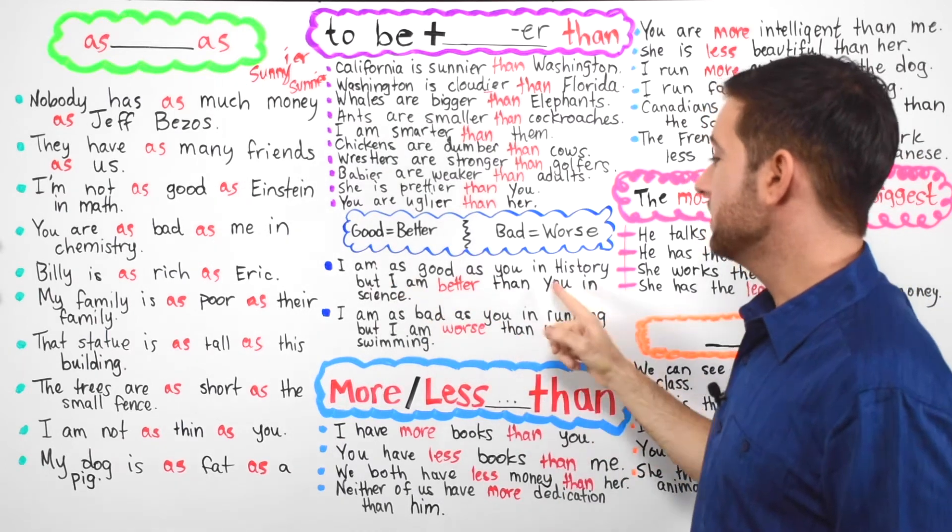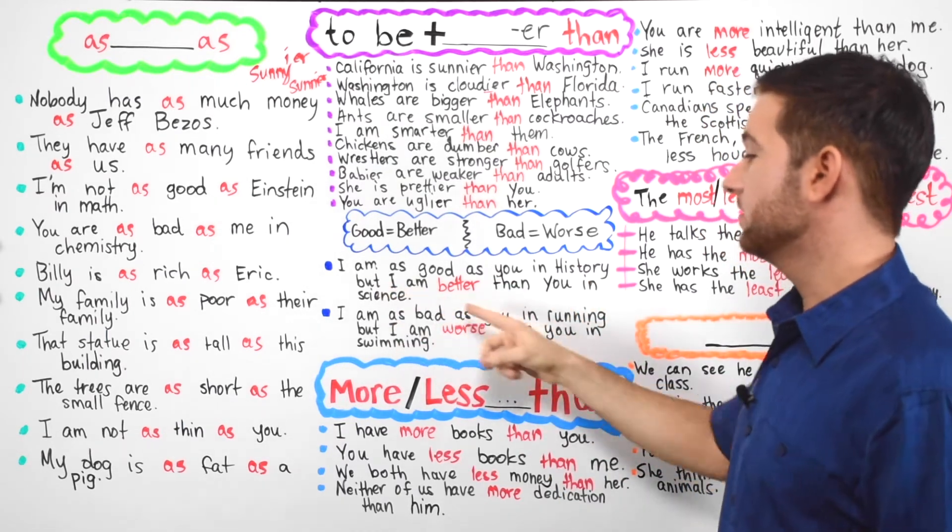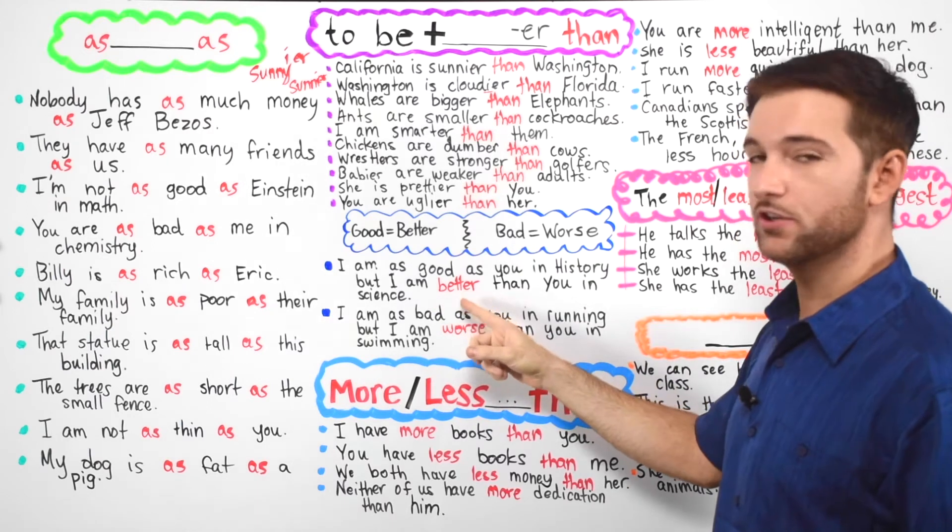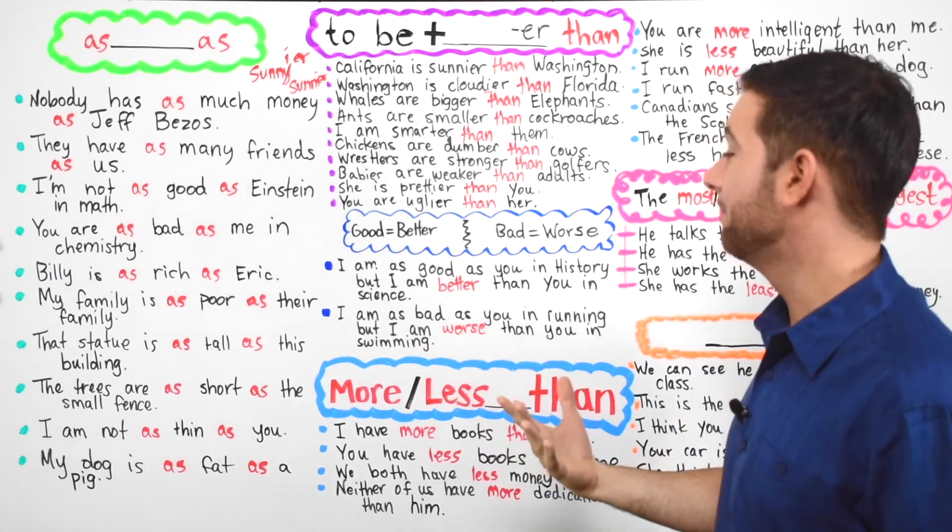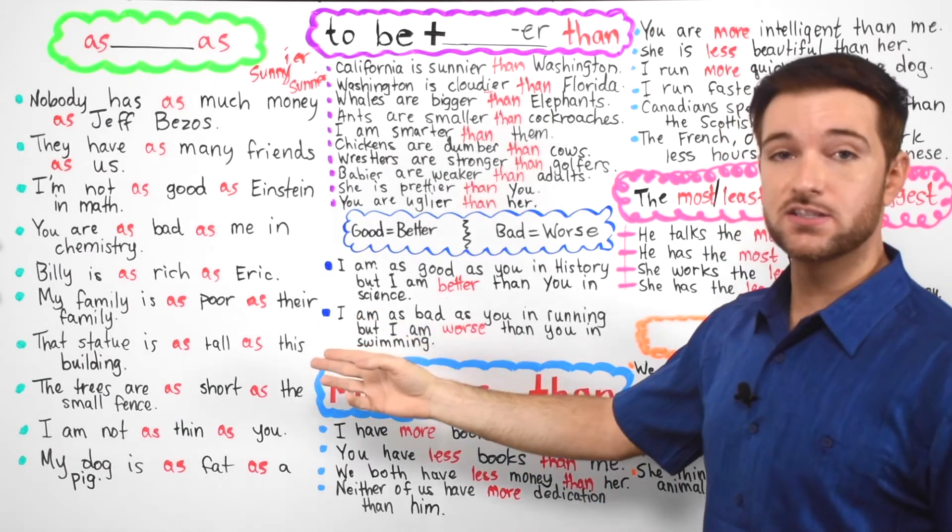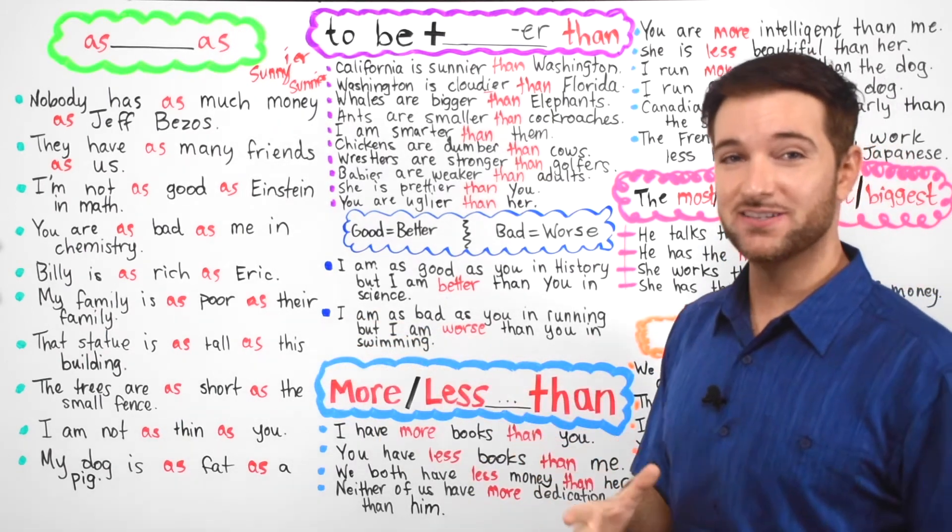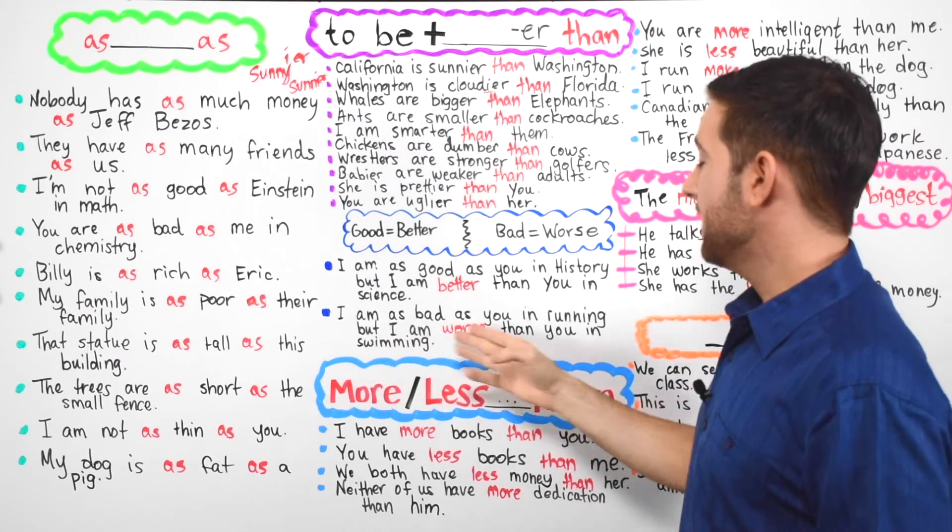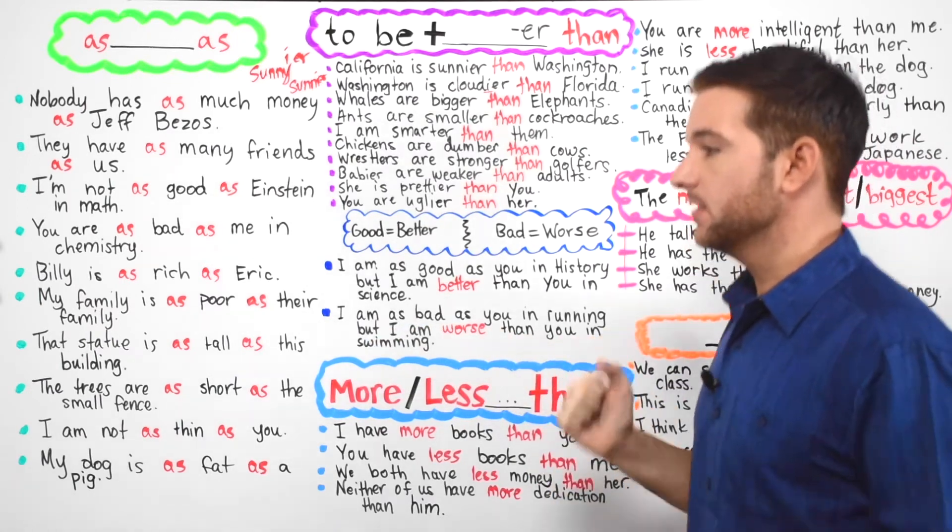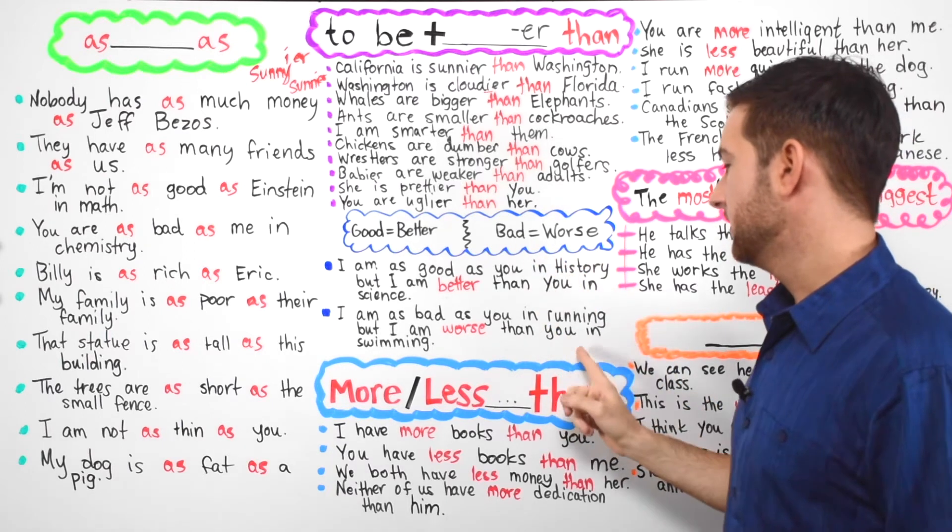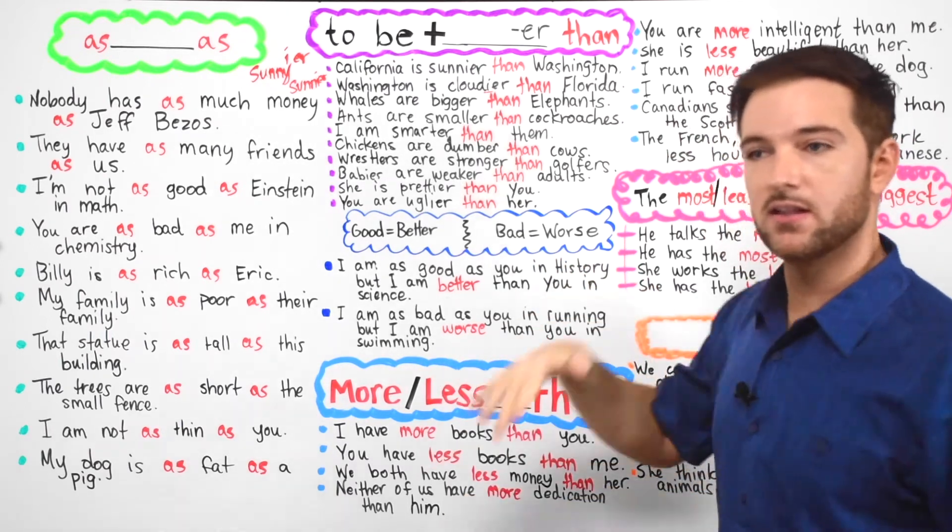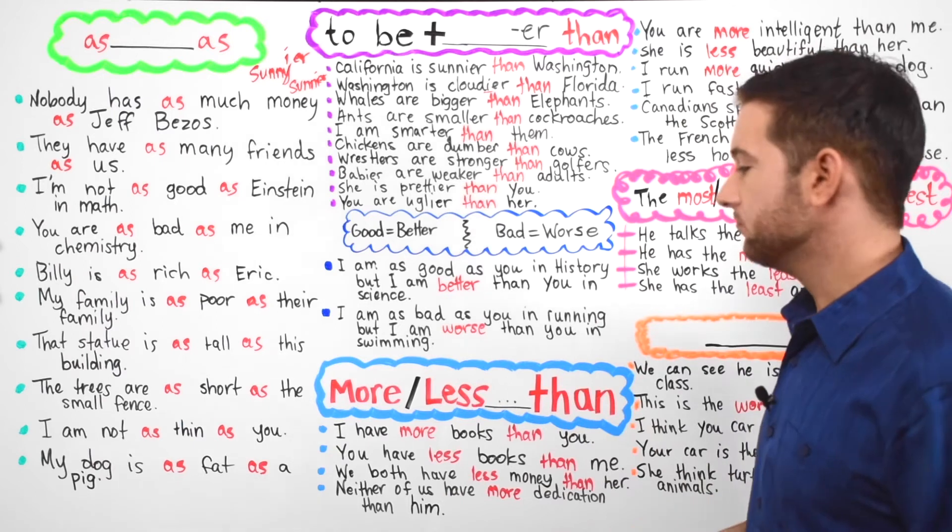So you can say something like, I am as good as you in history, but I am better than you in science. You're more good. That's not grammatically correct. You are better. Let's look at another one. So I am as bad as you in running, but I am worse than you in swimming. Like in the water, you swim.